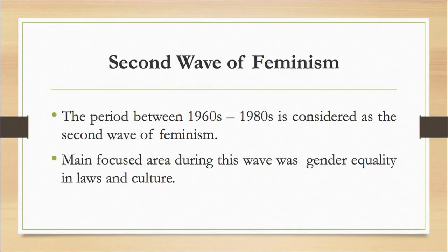Scholars like Virginia Woolf were associated with the first wave of feminism. The second wave of feminism started in the 1960s; the period between the 1960s to 1980s is considered the second wave of feminism. It began in the USA and spread to other western countries. Both the first and second waves of feminism were basically confined to western countries. The second wave emphasized gender equality in laws and regulations.